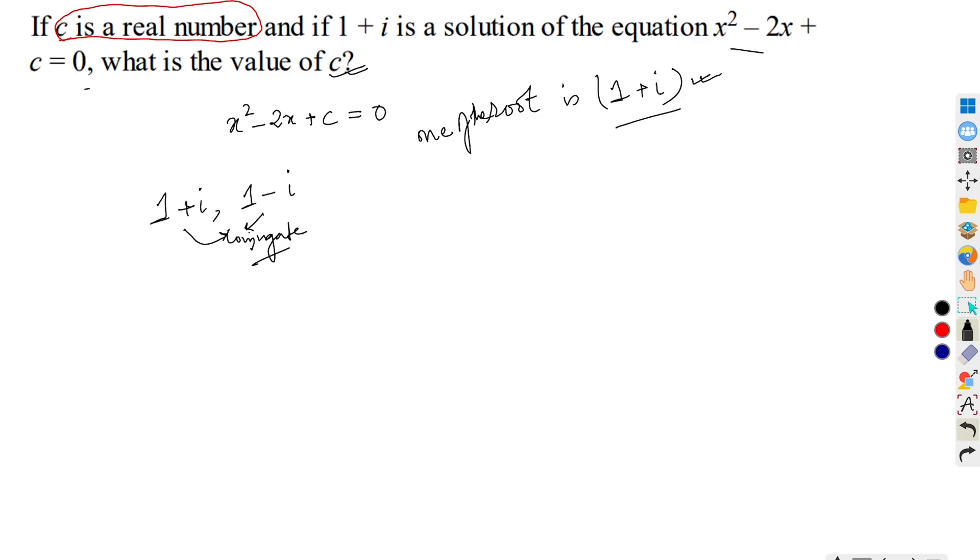From here we can obtain the value of c. We know that product of roots is c. Therefore, what we will do is just multiply these two. From here, simplifying, we get 1 squared plus 1 squared equals c. This implies c equals 2. Therefore, the value of c is 2.